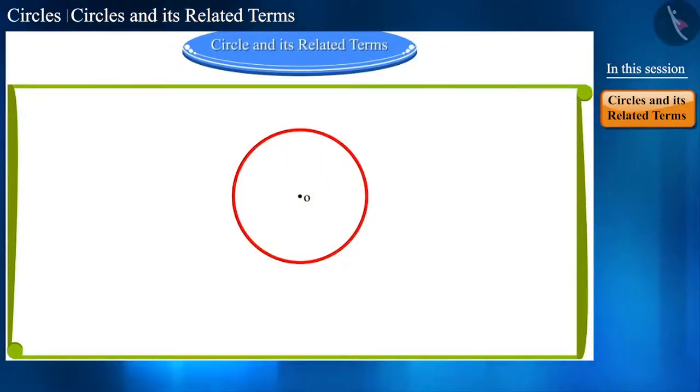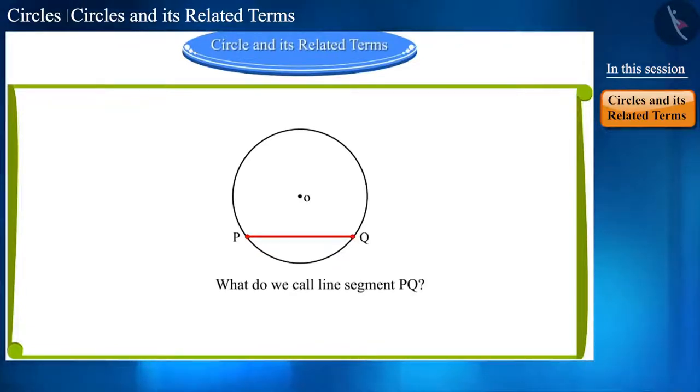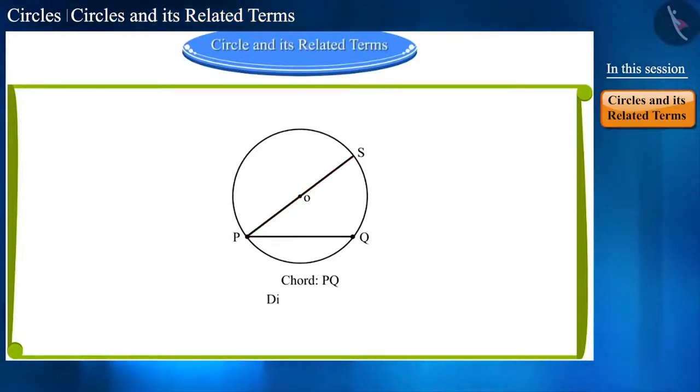Friends, suppose we join any two points lying on this circle like this, then what will we call this line segment? Yes, we call it a chord. But, if a chord is made in such a way that it goes through the center of the circle, then we call such chord a diameter.